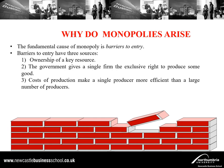Second, a government may give a firm the exclusive right to produce some good — such as a license granted to one holder to provide landlines. Third, costs of production may make a single producer more efficient than a number of producers. For example, having numerous water utilities would mean the network must sometimes be duplicated to deliver to different neighborhoods, making it inefficient for more than one firm to function in that given market.